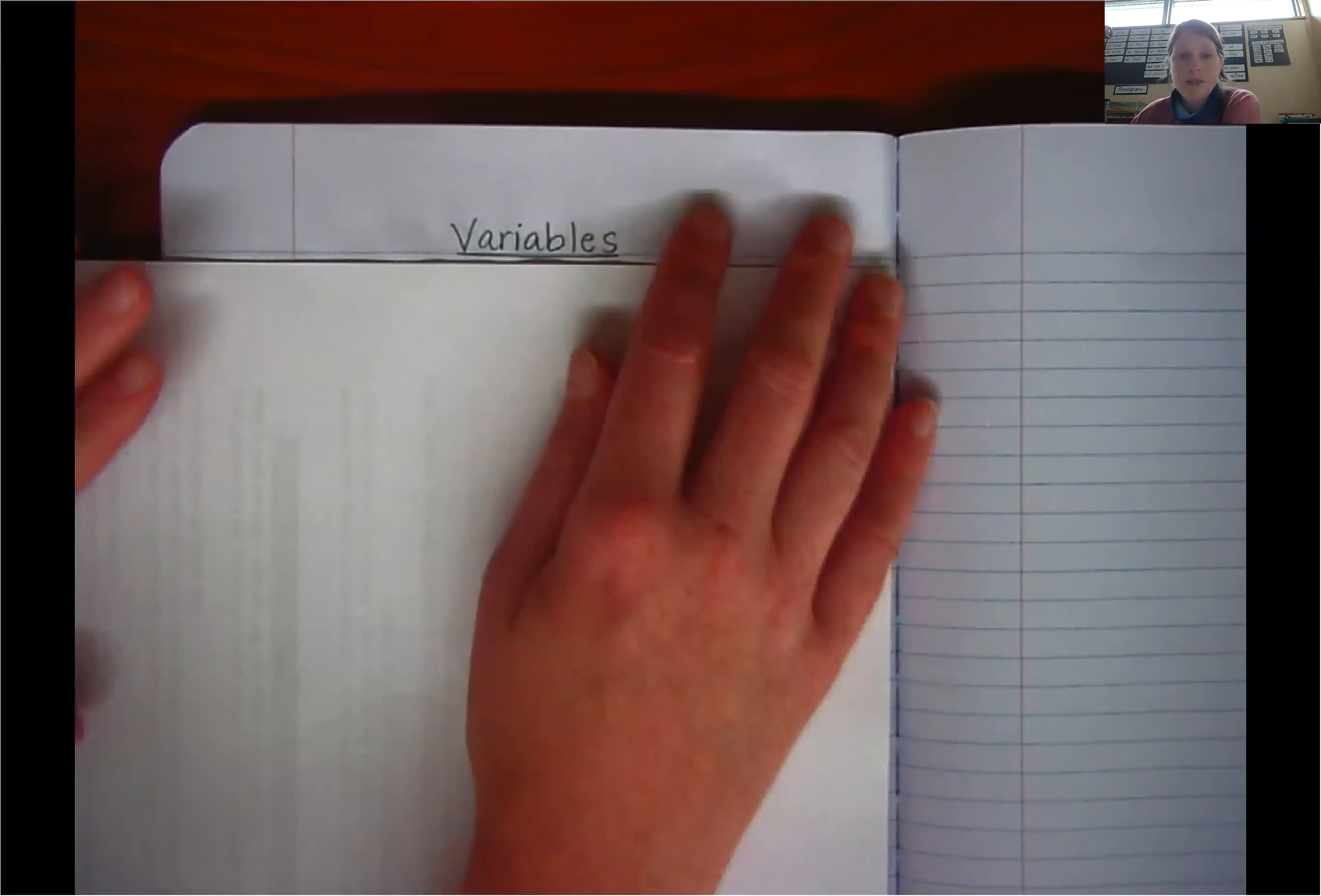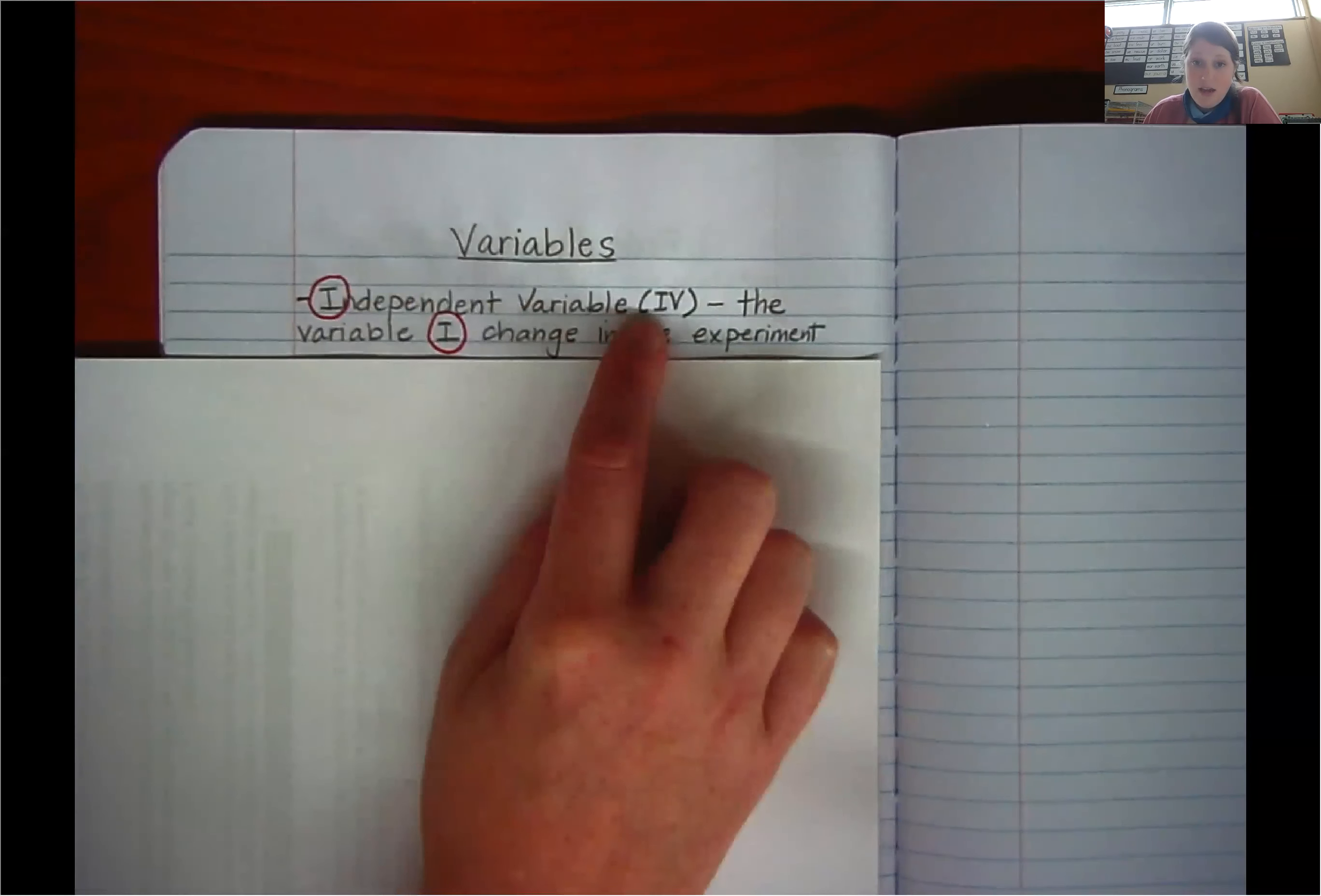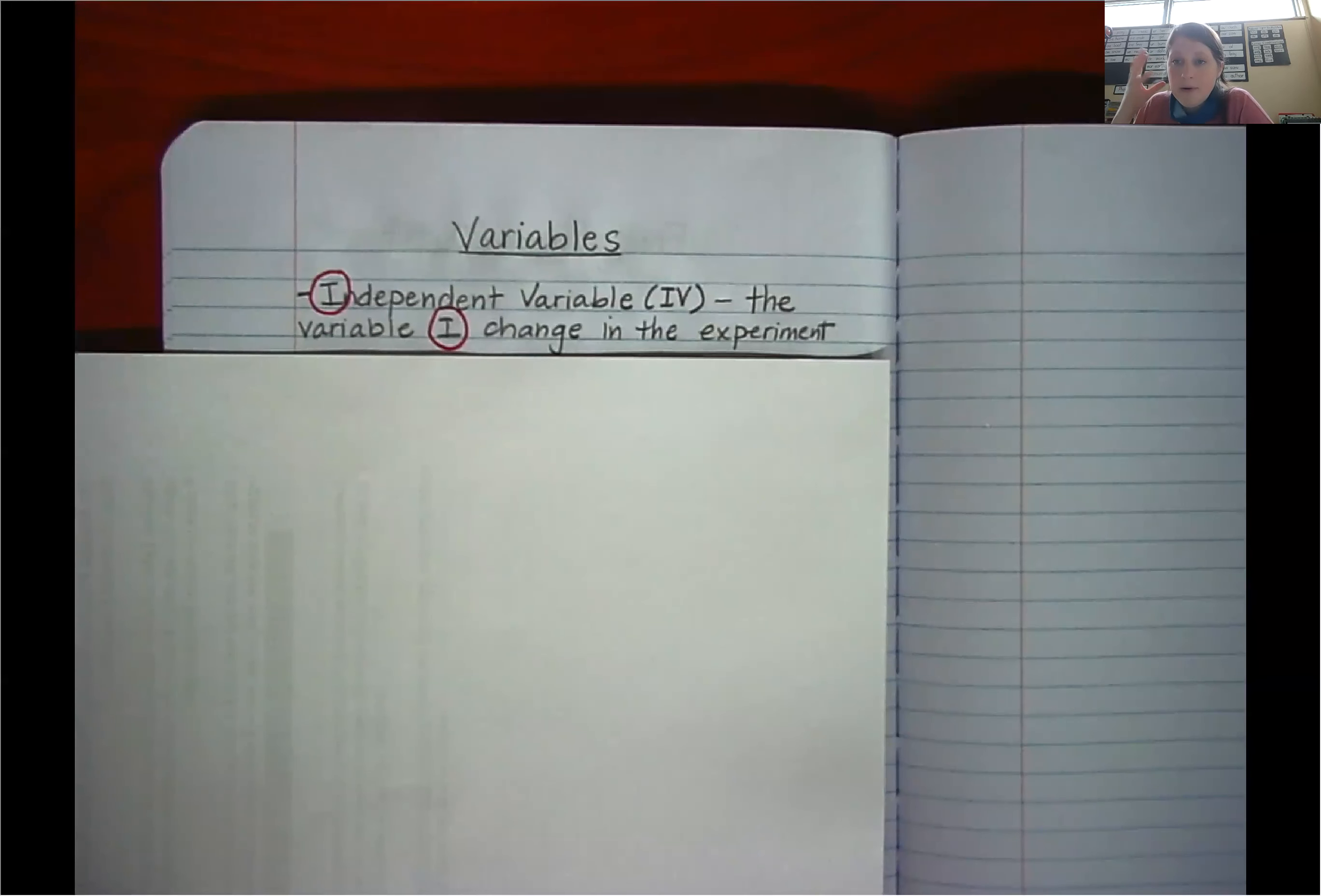The first one we're going to define is independent variable. Now the independent variable, sometimes called the IV, is the variable that I'm going to change in the experiment. It's the variable I can control or manipulate. I circled the letter I twice as sort of a mnemonic, a memory device for how to remember independent I. I change it. I'm changing the variable here.